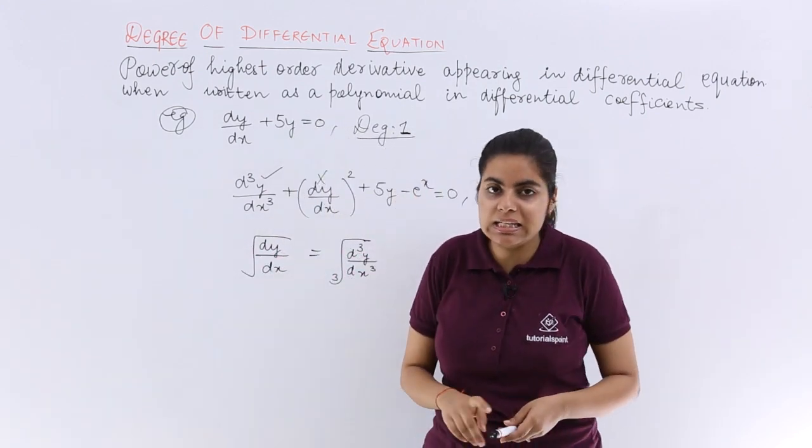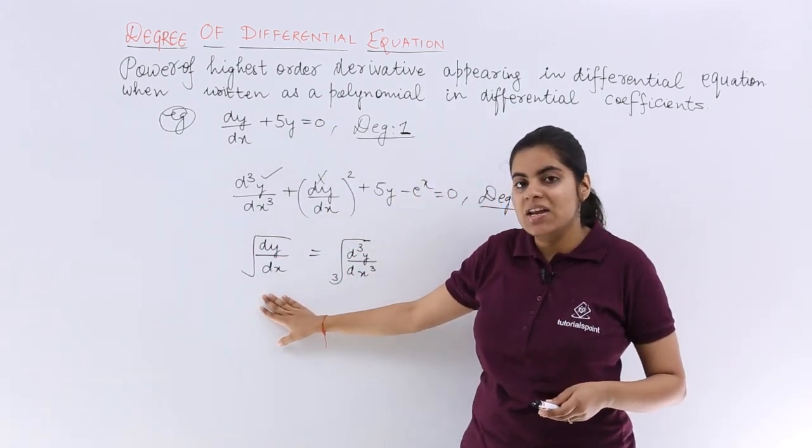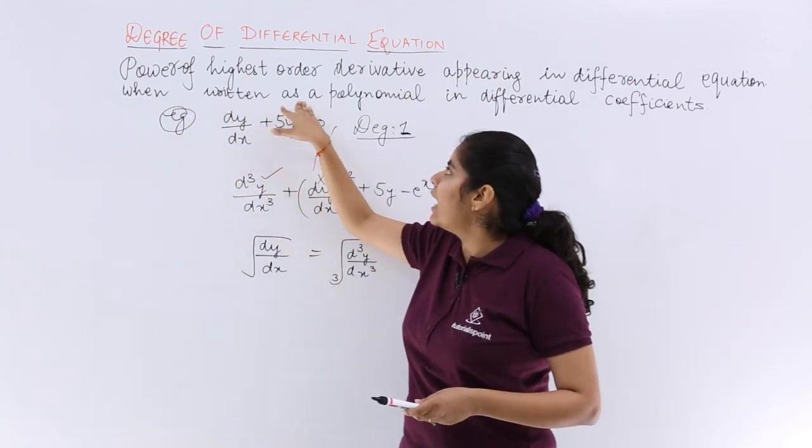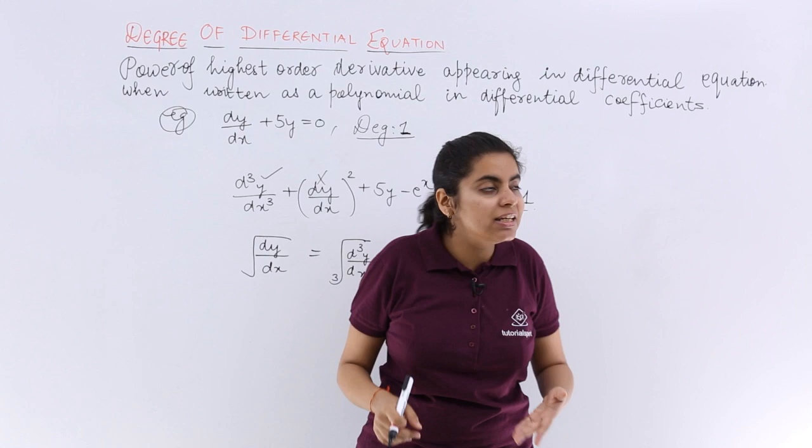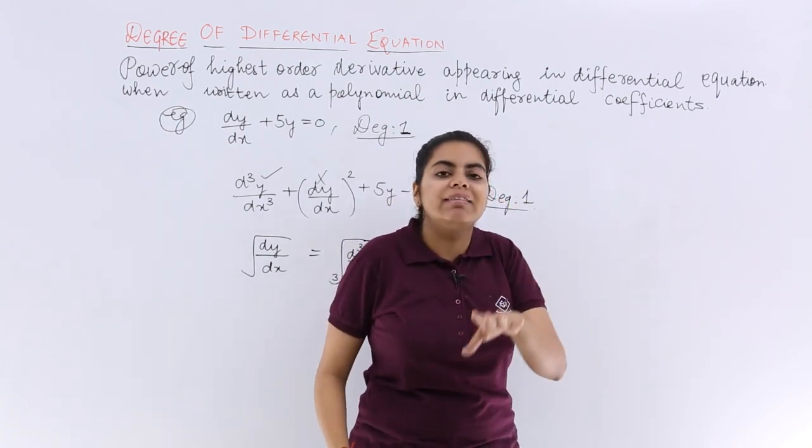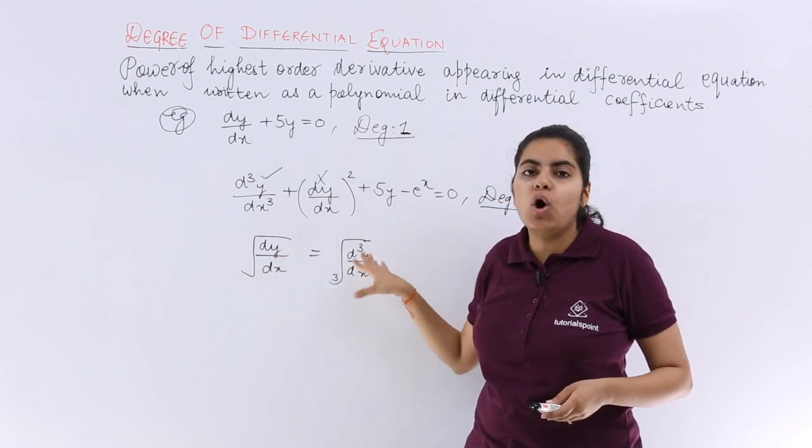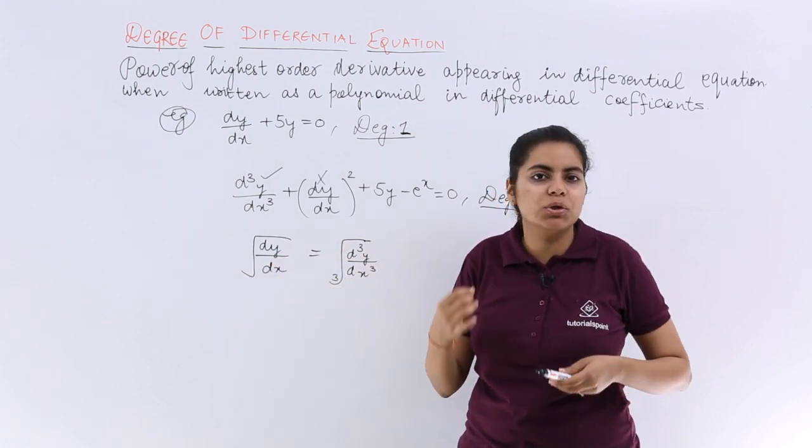Last but not the least case is this. Now you see the definition was not complete until the first line. It said when written as a polynomial in differential coefficients, that means I have to remove all these signs of square root or cube root.